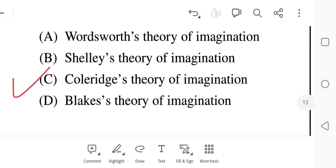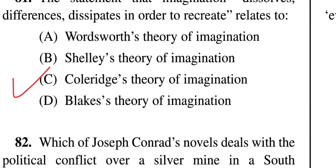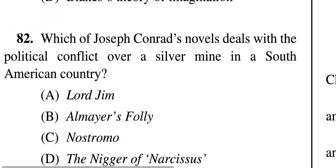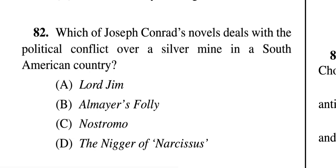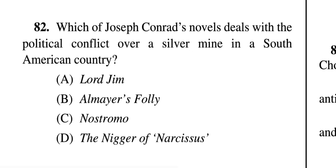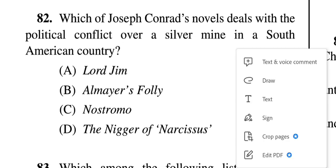Question 82: Which of Joseph Conrad's novels deals with the political conflict over a silver mine in a South American country? Conrad is known for his remarkable work 'Heart of Darkness,' which deals with colonialism and the exploitation of Africans. Options: A — Lord Jim, B — Almayer's Folly, C — Nostromo, D — The Nigger of the Narcissus. The correct answer is C — Nostromo, which deals with political conflict over a silver mine in a South American country.